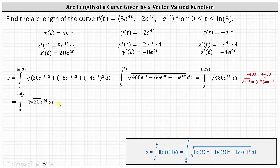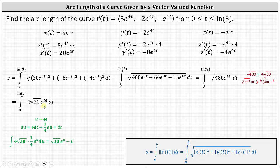To integrate, we perform u substitution, where u equals 4t, and therefore du equals 4dt. Solving for dt, we have 1 fourth du equals dt. Writing the integral with respect to u and leaving off the limits of integration, since 0 and natural log 3 are t values, we have the integral of 4 square root of 30 times e to the u times 1 fourth du. Simplifying, 4 divided by 4 equals 1. Integrating gives square root of 30 e to the u plus c, meaning the antiderivative with respect to t is square root of 30 e to the 4t.